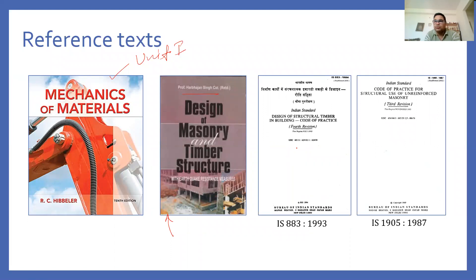Besides textbooks, we will also be referring to IS codes. The first IS code, which is related to structural timber in buildings, is IS 883:1993 — where IS stands for Indian Standard, 883 is the serial number, and 1993 is the year it was revised. Similarly, we will use IS 1905:1987 when designing brick masonry structures.